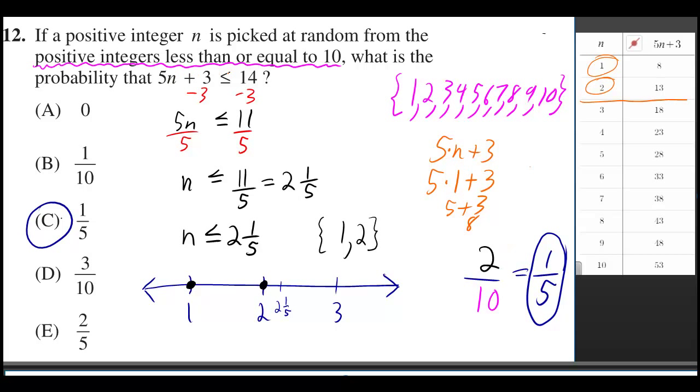So either way you get two numbers that satisfy that condition. But you're choosing out of 10 numbers, so it's 2 out of 10, or if you reduce that, it's 1 out of 5.